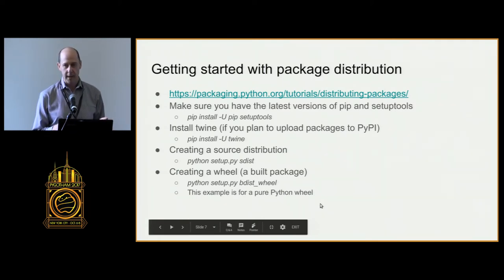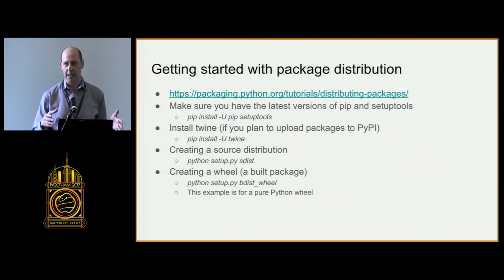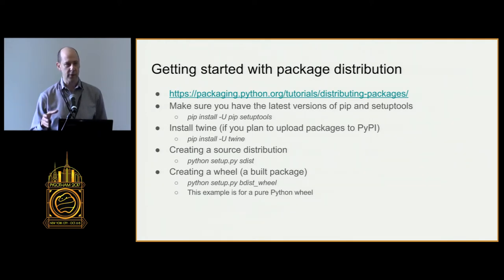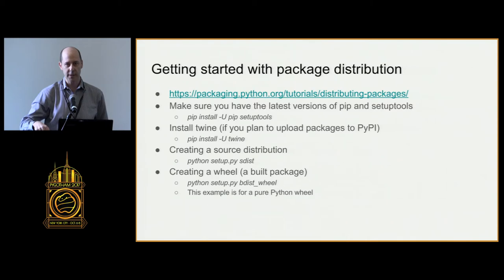There are actually three different kinds of wheel files. The example I'm talking about today is a pure Python wheel, meaning my project has only Python code — no compiled C modules. If I had those, they'd be compiled for a specific platform like Linux or Windows, and I'd have to make a platform wheel. My project targets Python 2.7. If it ran on both Python 2 and 3, I could make a universal wheel, which could be installed on any version of Python.